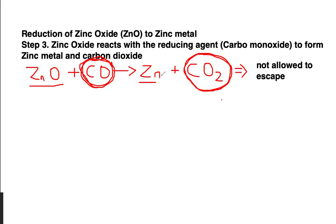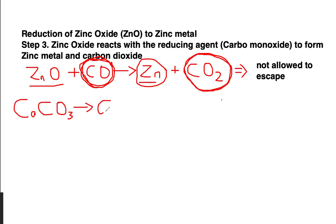Once zinc has been produced, the extraction is complete. Now, because the temperature inside is very high, the limestone present — which is calcium carbonate (CaCO₃) — decomposes into calcium oxide (CaO) and carbon dioxide. Again, this carbon dioxide should not be allowed to escape for the same reasons discussed.